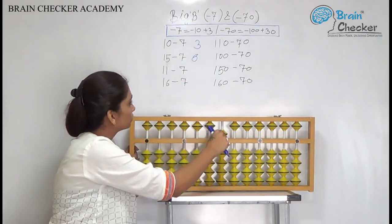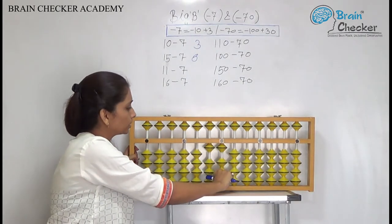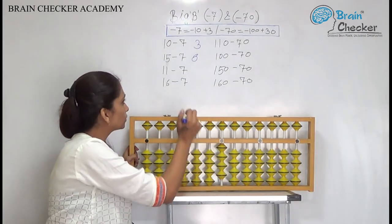Same way the next example is 11 less 7. So add 3 less 10. So the answer is 4.